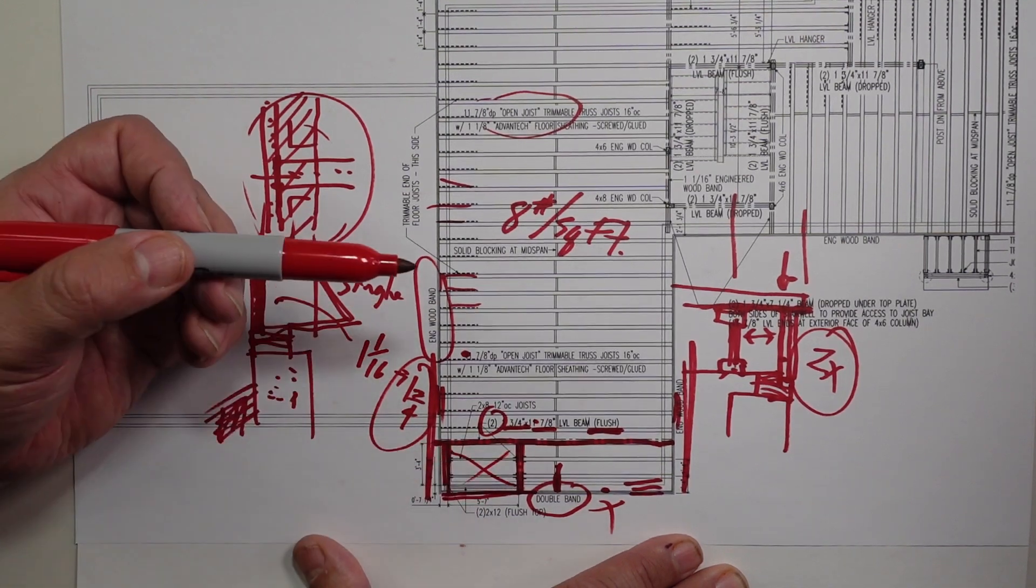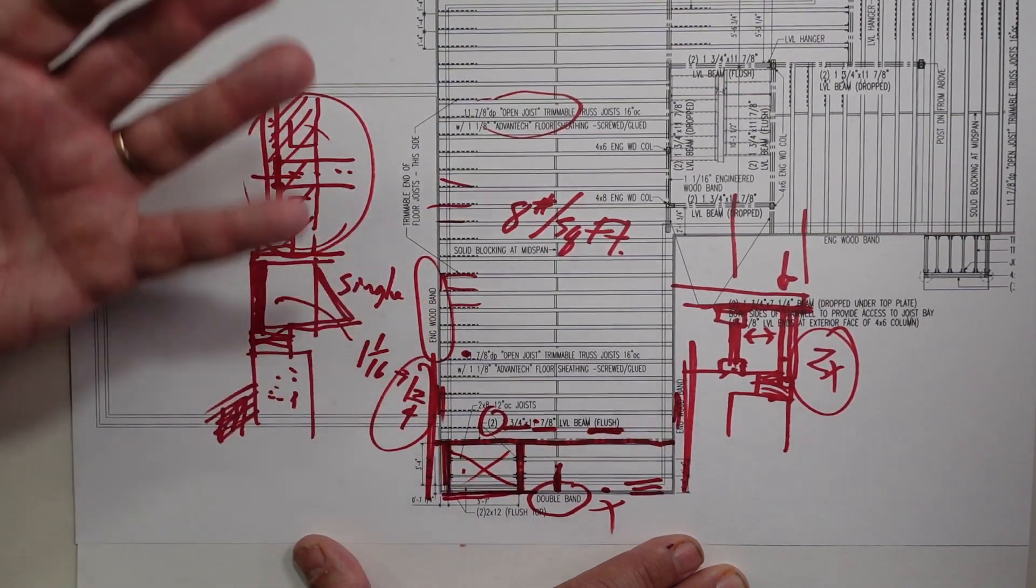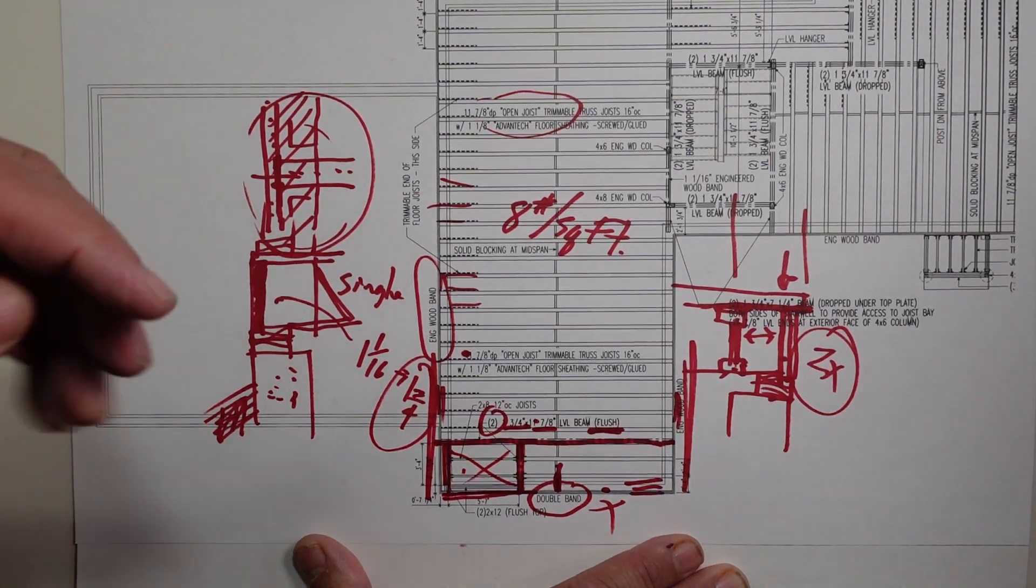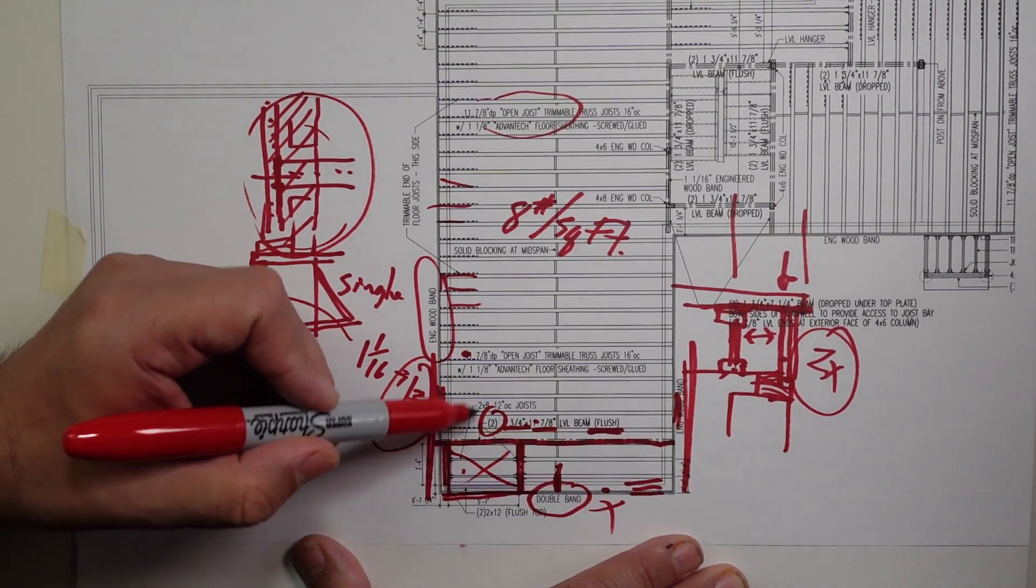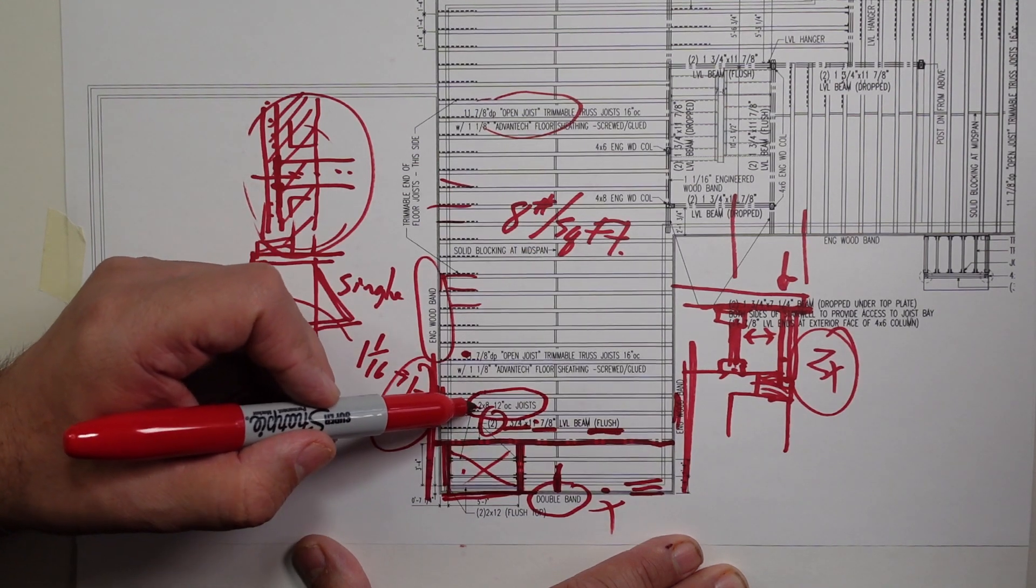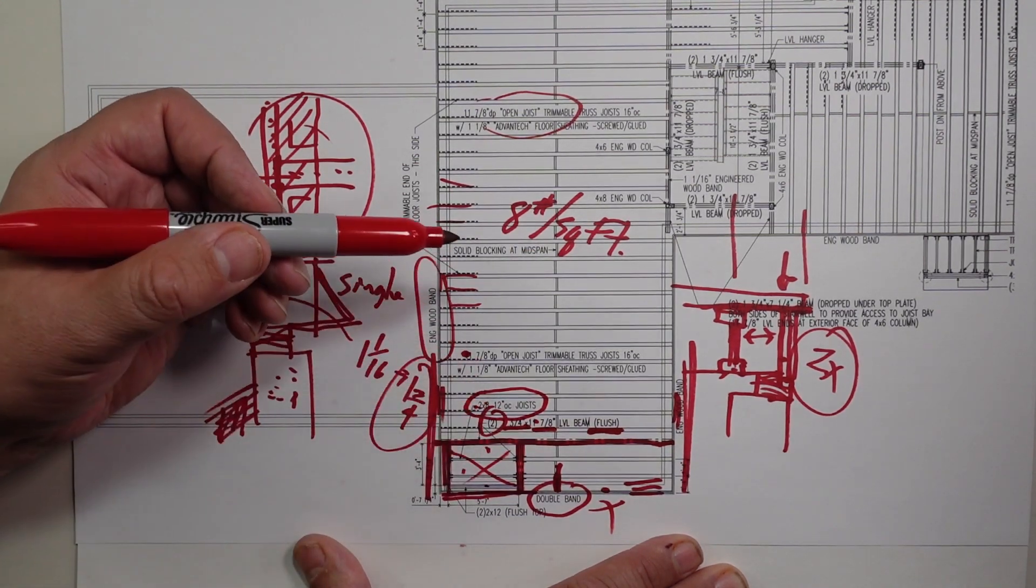But basically what we do is we frame a hole, like an elevator shaft or a stair shaft. But more importantly, is we come back and frame into that. And you can see here, we call two by eight at 12 inches on center.